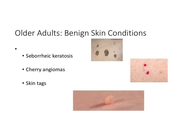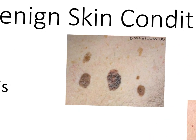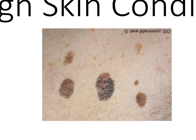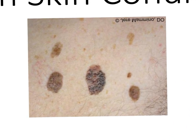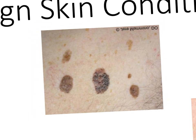Older adults have many different benign skin conditions. The first one is seborrheic keratosis. If you see this, it looks like moles or nevi that have some kind of hardening on the top, almost like crusting. Even if they are benign, you can't tell just by looking at a skin condition to know for sure. So we would still want an older adult to report this and have it checked out to make sure it's not anything more serious.